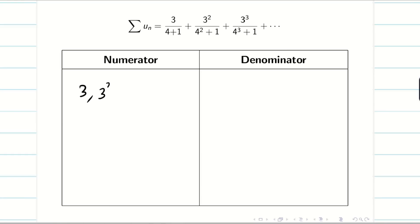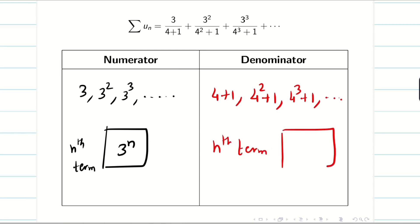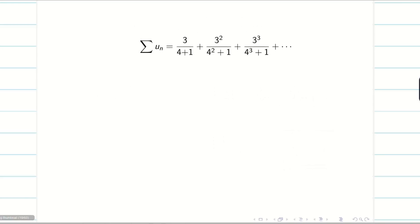So the first term is 3, second term is 3 square, third term is 3 cube, so my nth term is 3 power n. Now for the denominator, first term we have 4 plus 1, second term we have 4 square plus 1, third term we have 4 cube plus 1. So my nth term is 4 power n plus 1. Since the problem has 4 power n, 3 power n, in general if it has any a power n or n power n or n factorial, then I cannot apply limit comparison test. I have the option to go for ratio test.